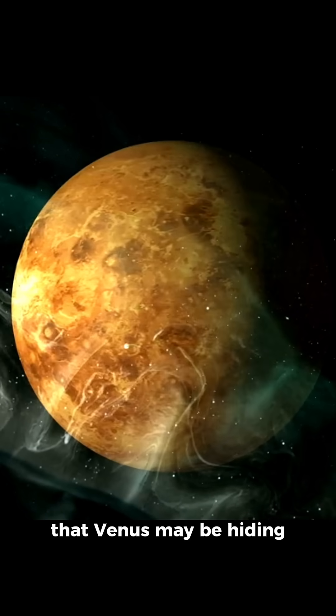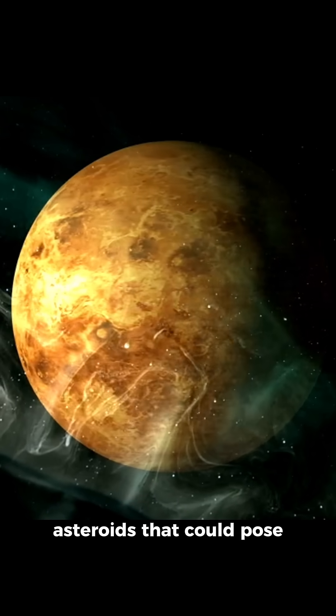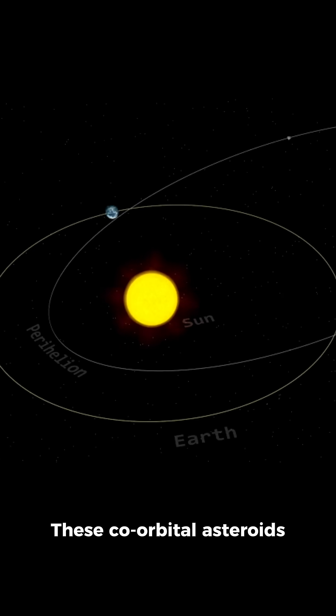A recent study suggests that Venus may be hiding asteroids that could pose a threat to Earth. These co-orbital asteroids follow a similar path around the Sun as Venus but are difficult to detect due to the Sun's glare.